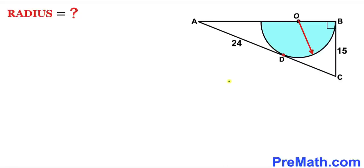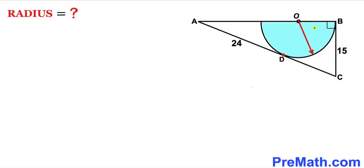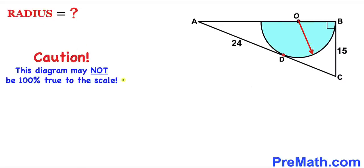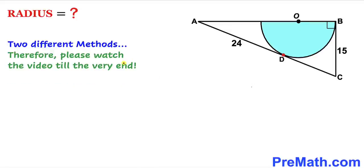Welcome to pre-math. In this video we have a semicircle fully inscribed in a right triangle ABC, such that side length BC is 15 units and segment AD is 24. Our task is to calculate the radius of this semicircle. This figure may not be 100% true to scale. I'm going to show you two different approaches to solve this problem, so please watch the video till the very end.